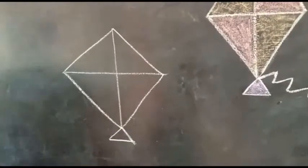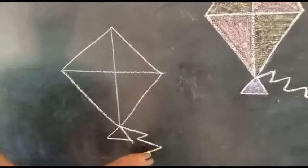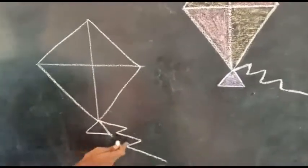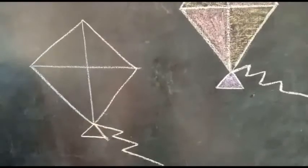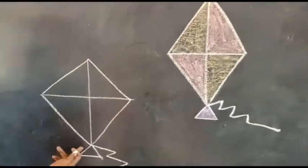Draw a zigzag line. It is a thread. Thread means no. Now, we get a kite and colour it.